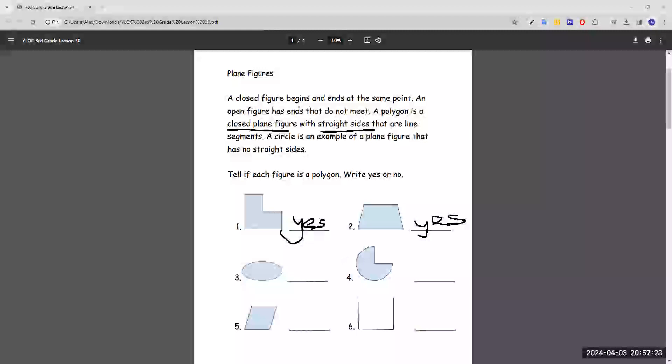Number three, this one doesn't have straight sides because it's a circle, and it says here a circle is an example of a plane figure that has no straight sides, which means that number three isn't a polygon.